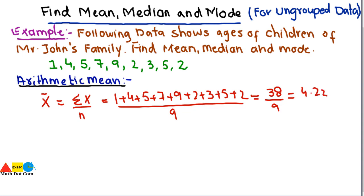So the mean age of the children of the family, of the John's family, is 4.22. So this is how you can find the arithmetic mean of ungrouped data.